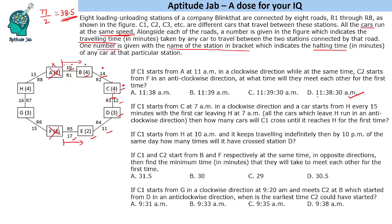Next question says, if C1 starts from C at 7 AM in a clockwise direction and a car starts from H every 15 minutes with the first car leaving H at 7 AM, all the cars which leave H run in an anticlockwise direction. How many cars will C1 cross until it reaches H for the first time?